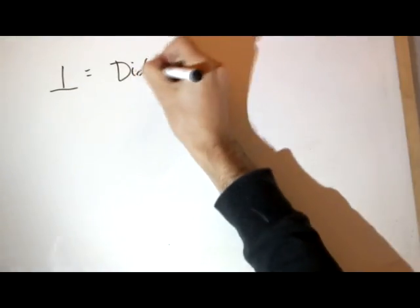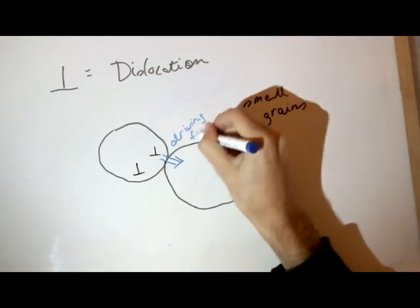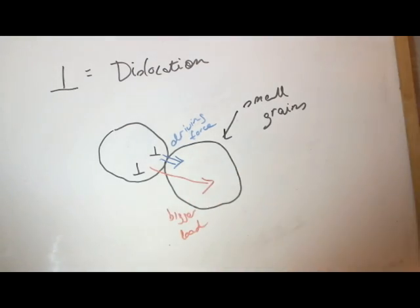By reducing the grain size, there is less pileup, creating less driving force, requiring a larger stress to move the dislocations to the next grain.